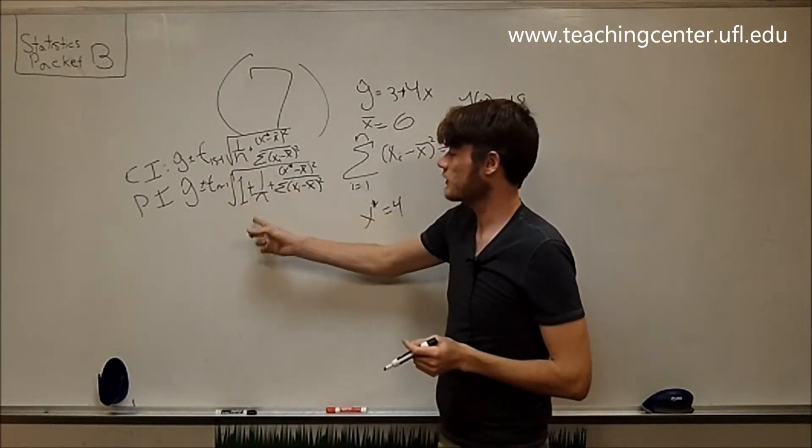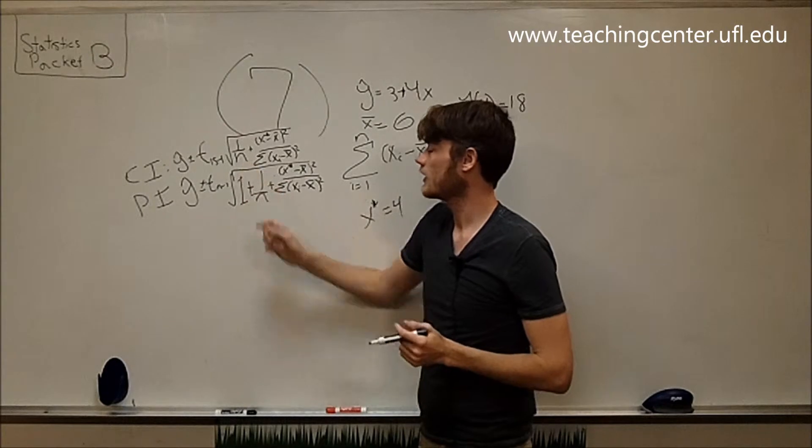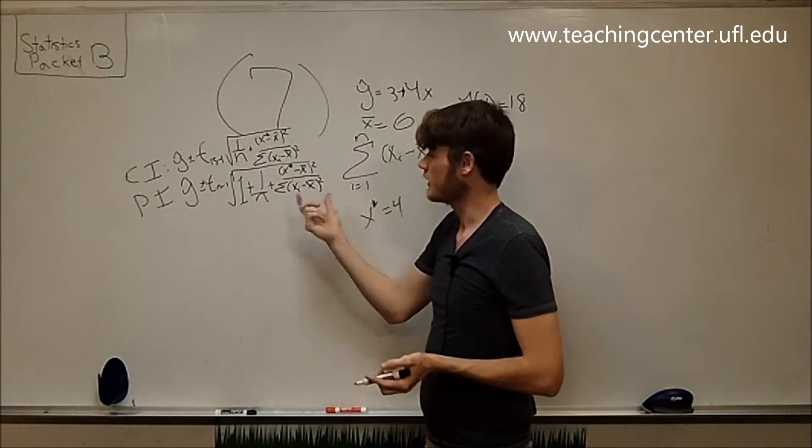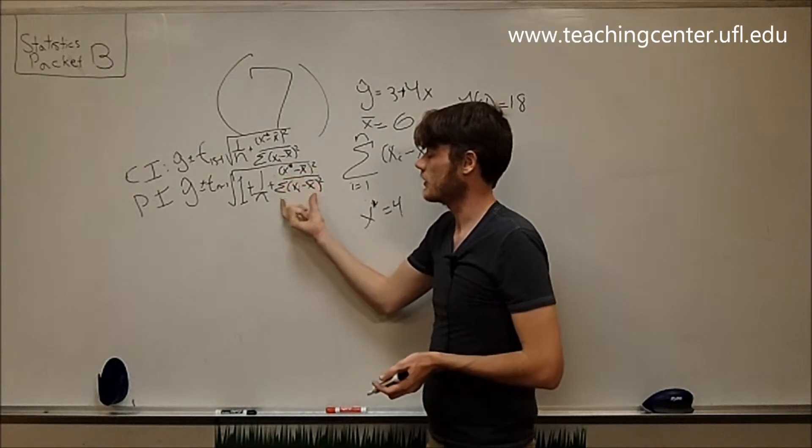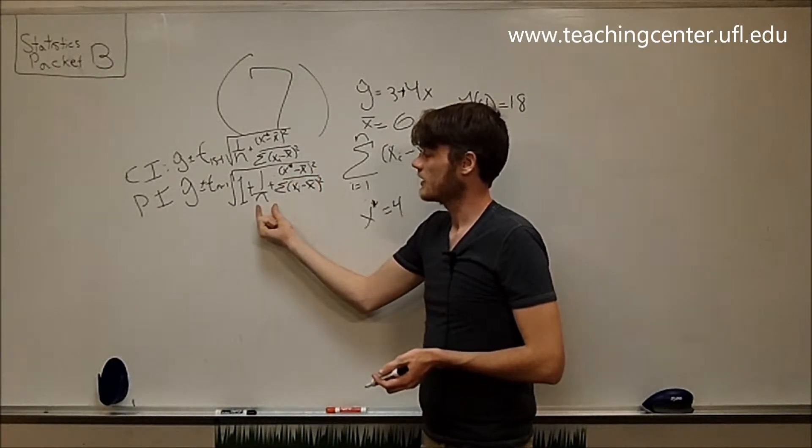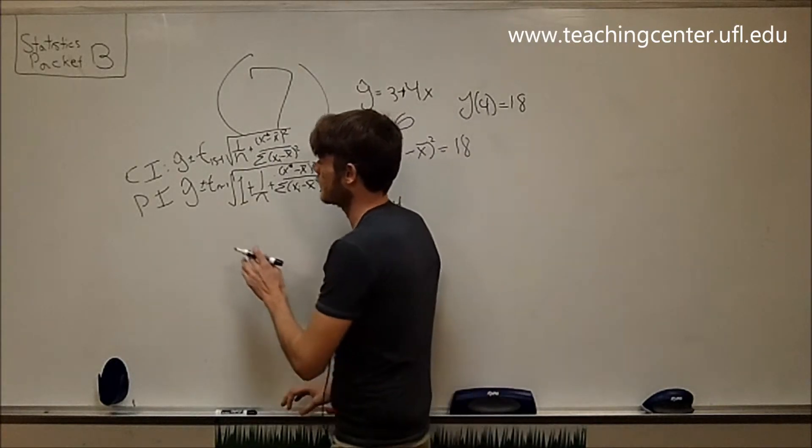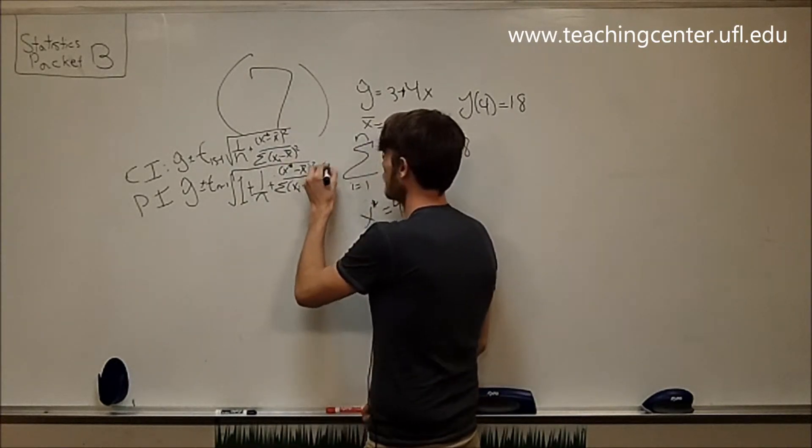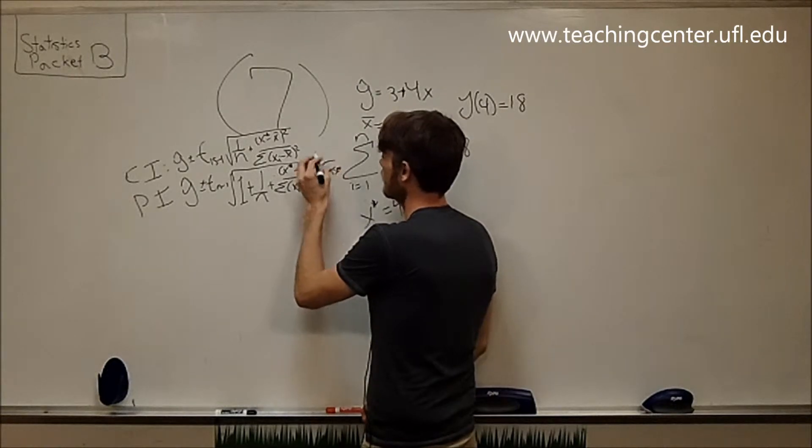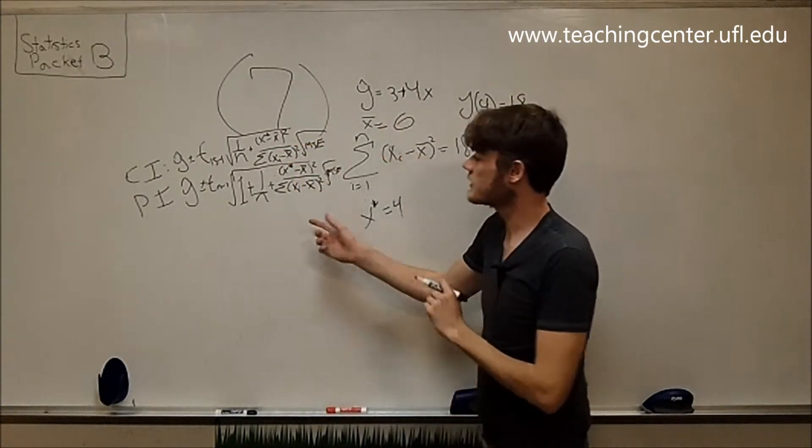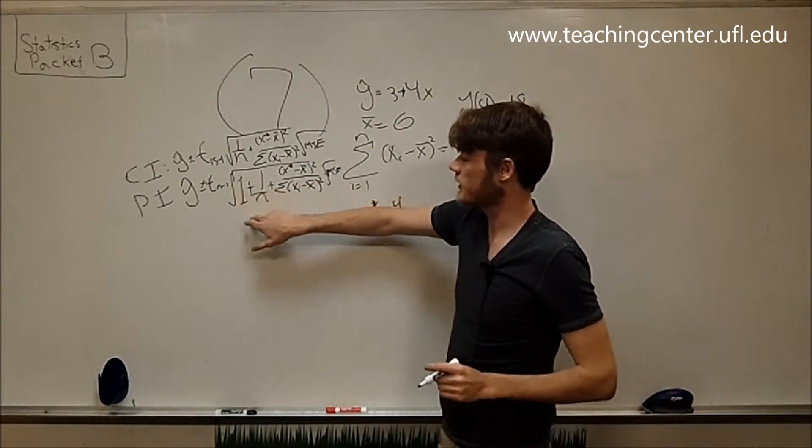That's the only difference between these two equations. Now what does that mean? So if x star equals x bar, this term drops out because this becomes 0, and we have 1 over n. And the only difference between this and this is that one factor. I'm sorry, there's one thing messed up. Times square root of MSE.